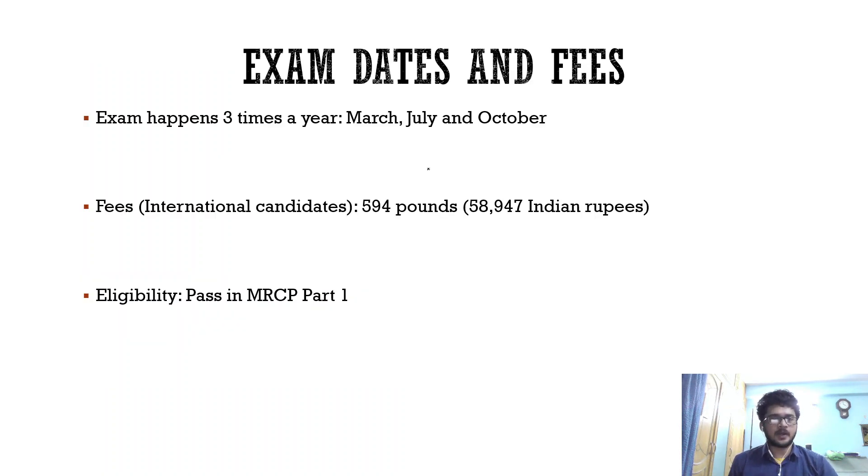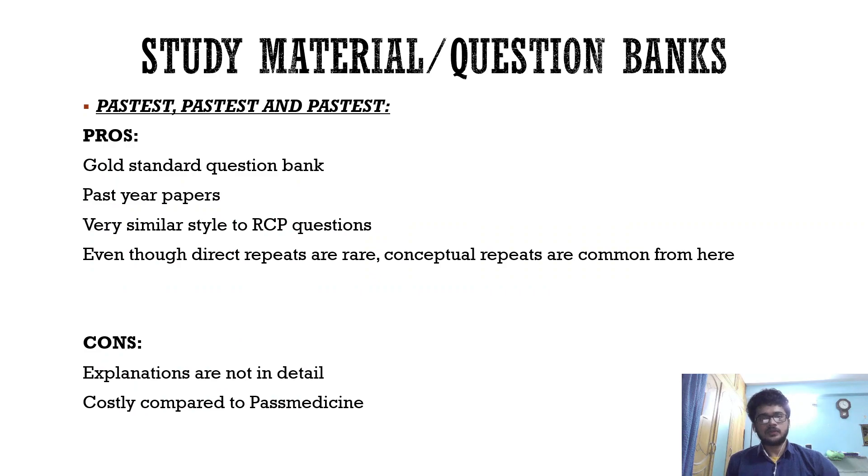My preparation period was two and a half months. Coming to exam dates and fees, just like Part 1, Part 2 happens three times a year in March, July, and October. The fees for international candidates is 594 pounds, almost 59,000 Indian rupees. The eligibility is just that you have to pass Part 1. Applying for Part 2 is very simple - you don't have to upload your PMQ or any other documents, just pass Part 1, go to your my MRCP account, pay the fees, and you're done.